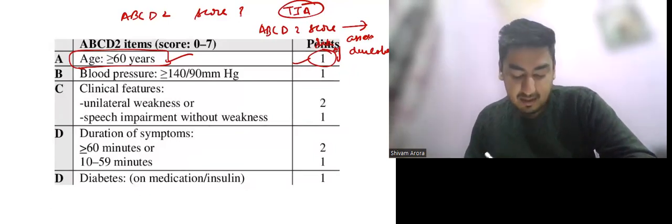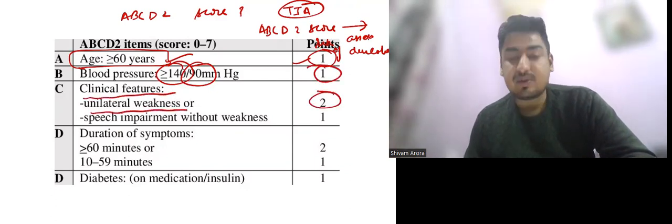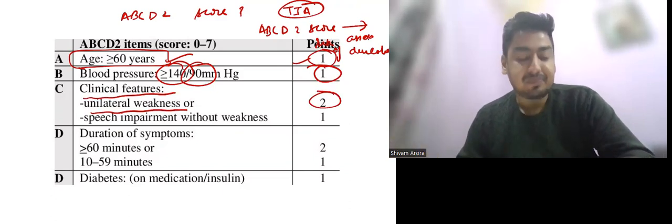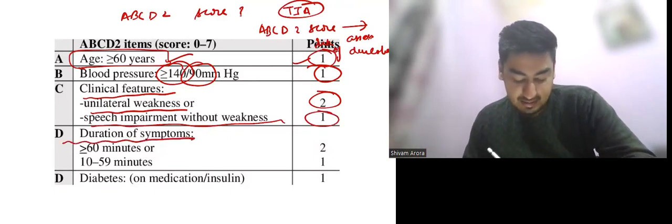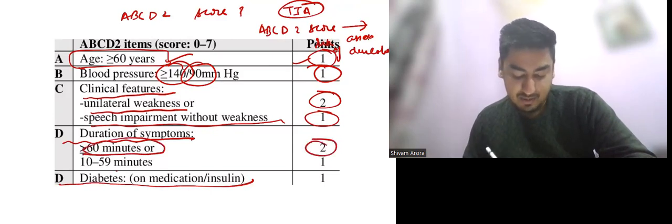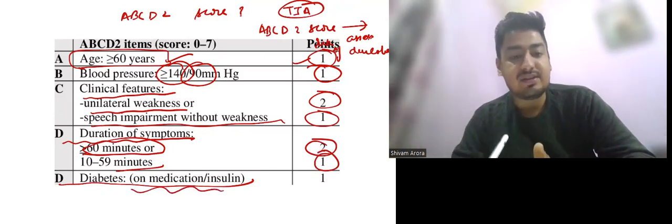C is for clinical features. Unilateral weakness has a score of 2, which is more suggestive of stroke kind of TIA, while speech impairment without weakness has a score of 1. D for duration and D for diabetes again. Duration more than 60 minutes, score of 2. Ten to 59 minutes, score of 1. Diabetes on medication or on insulin, score of 1.